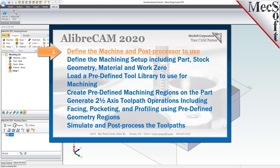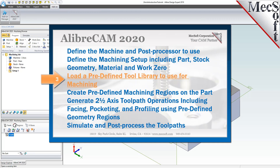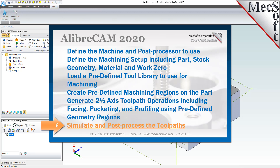We will perform the following basic steps in machining this model. First, we will define the machine and the post processor to use. Then we will define the machine setup, including the stock geometry, material, and work zero. Then we will load a predefined tool library, create predefined machining regions, generate our 2.5 axis toolpaths including a facing operation, two pocketing operations, and a profiling operation using predefined regions. Then we will simulate and post process the toolpaths.